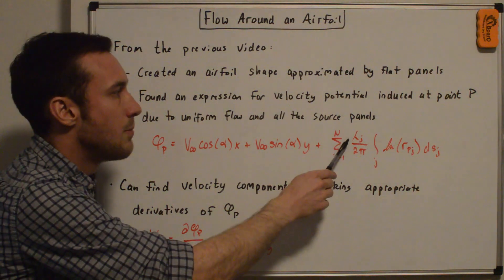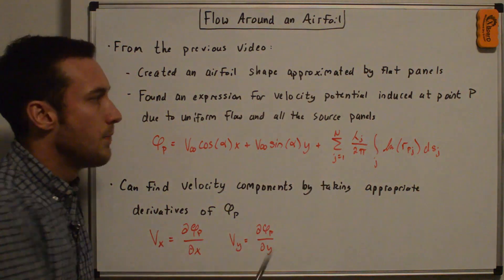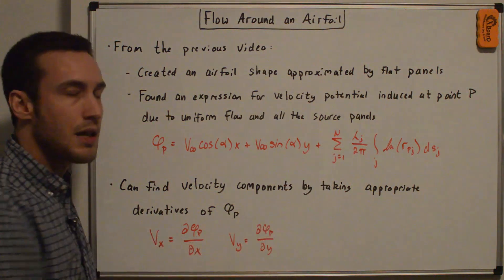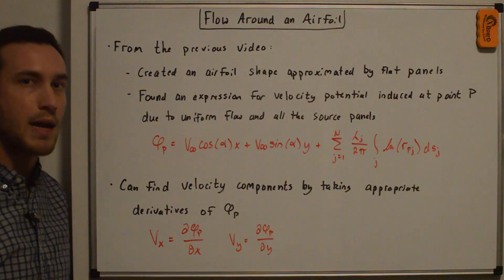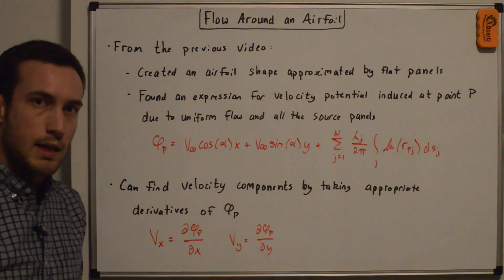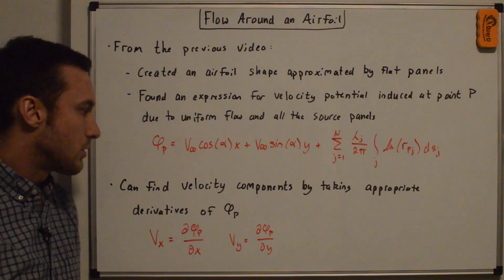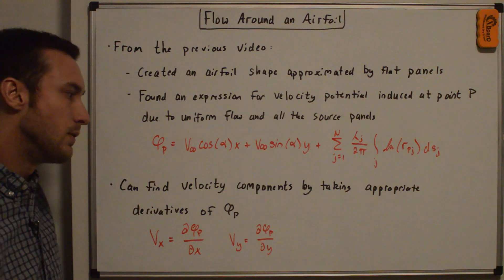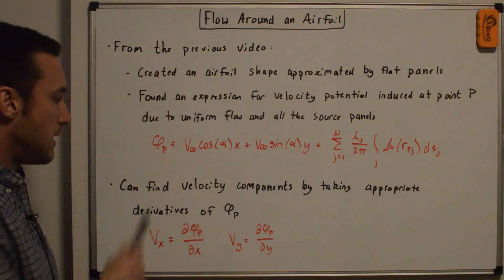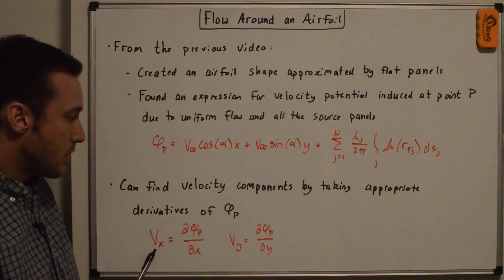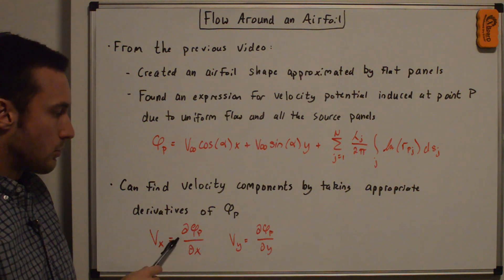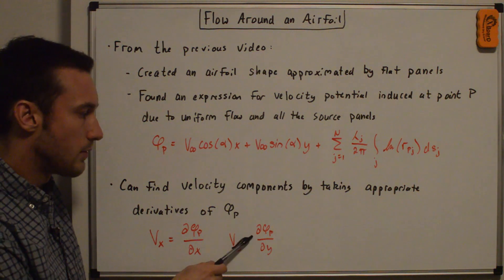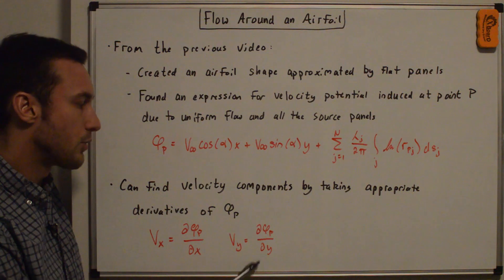Recall that lambda_J, the source panel strengths, is outside of the integral because these strengths are constant on each panel but can vary from panel to panel. Based on the definition of the velocity potential, we can find velocity components by taking appropriate derivatives of phi_P. The x component of velocity is the partial derivative of phi_P with respect to x, and the y component is the partial derivative of phi_P with respect to y.